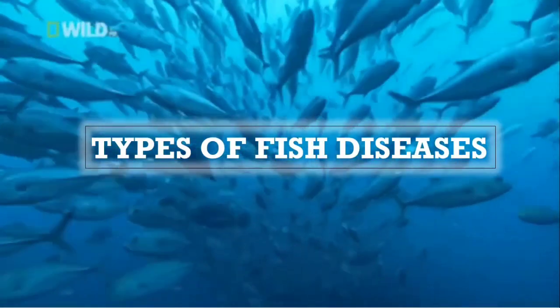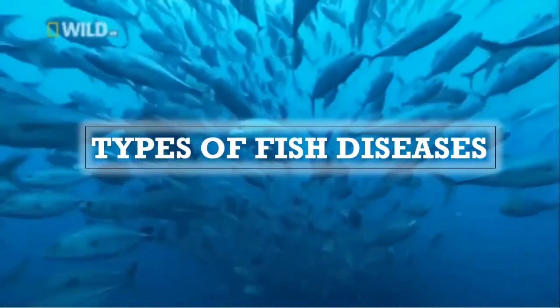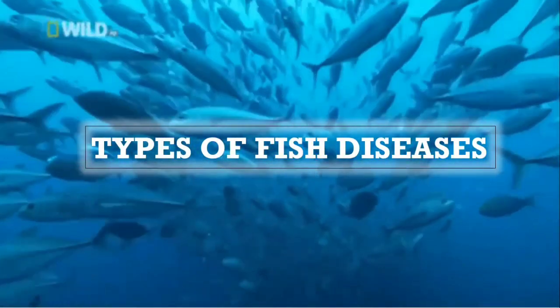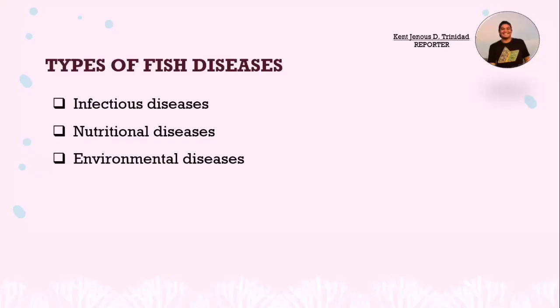Types of fish diseases. One of the simplest ways of grouping fish disease is as follows: infectious diseases, nutritional diseases, and environmental diseases.